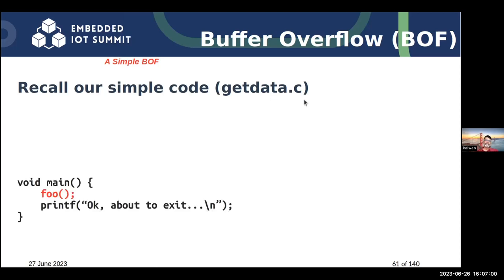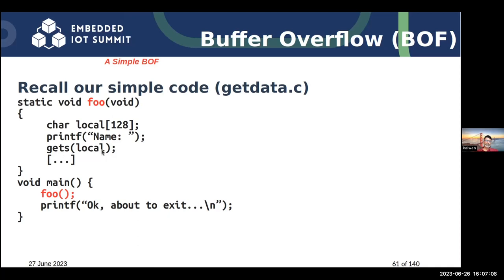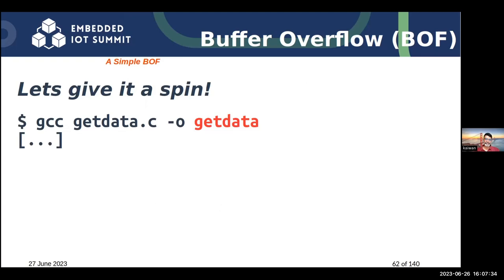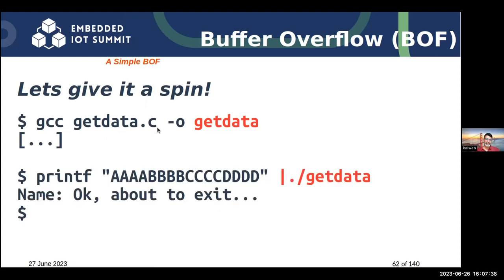You can even do an underflow error — going to the negative side. Reading or writing — that too is an OOB bug. We can have read overflow, read underflow, write overflow, write underflow. Now look: let's write a program, get_data.c, as our manager asked us to do. Main calls foo. The function foo asks for your name and puts it in the local variable using gets. We have a local buffer of 128 bytes.